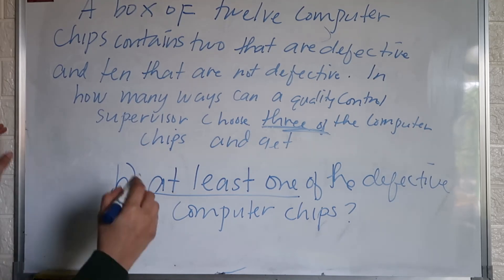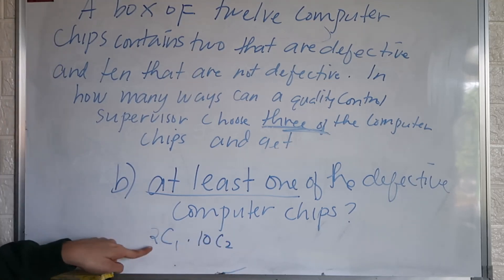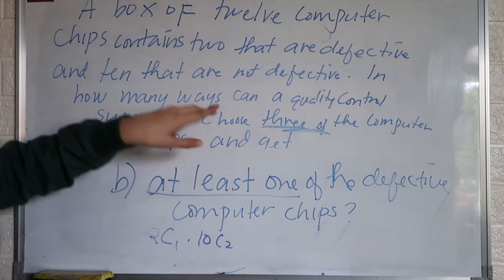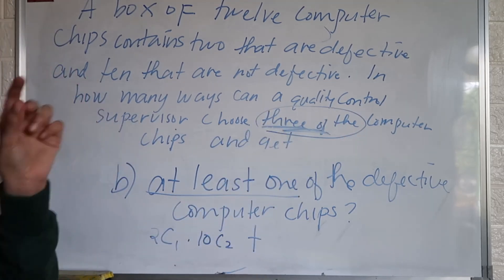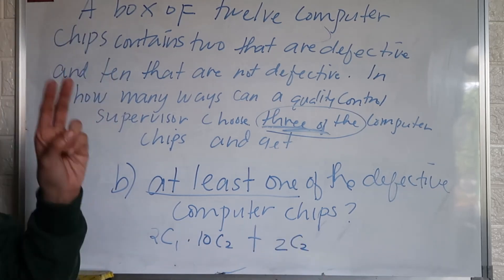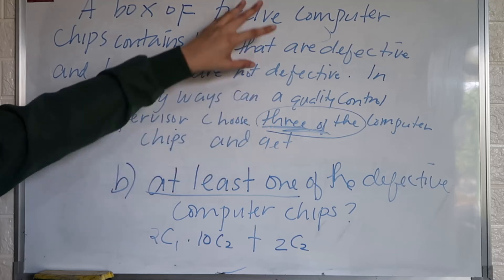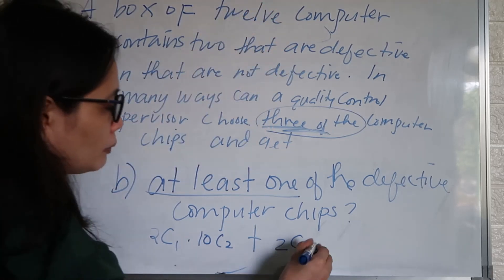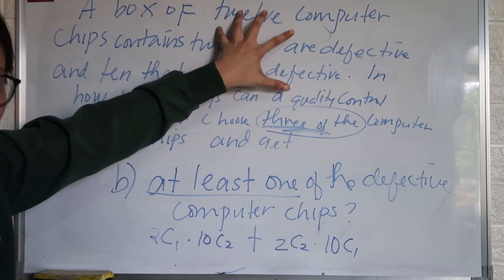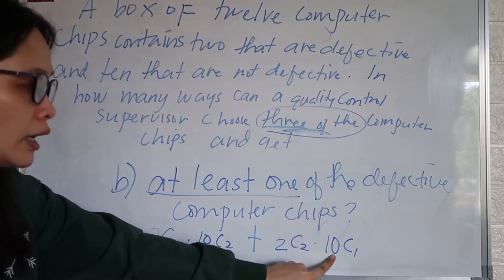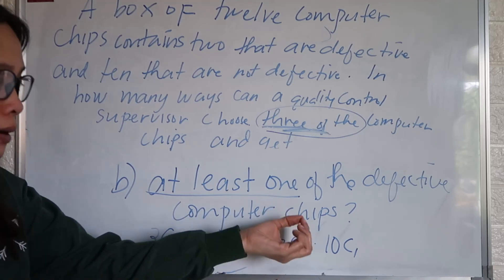So we have C(2,1) because there are two defective chips, multiplied by C(10,2). One chip comes from the defective ones, and the remaining two are selected from the non-defective chips to complete the three. Plus C(2,2) multiplied by C(10,1), meaning two of the three chosen computer chips came from the defective ones, and one comes from the non-defective chips.